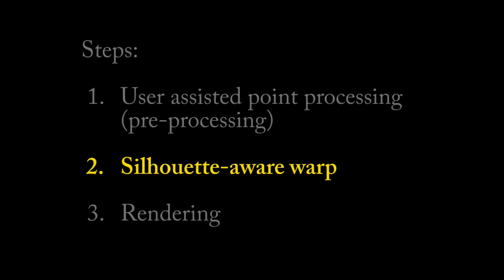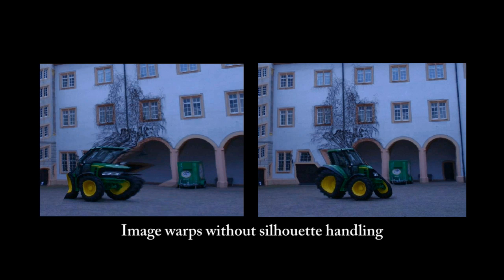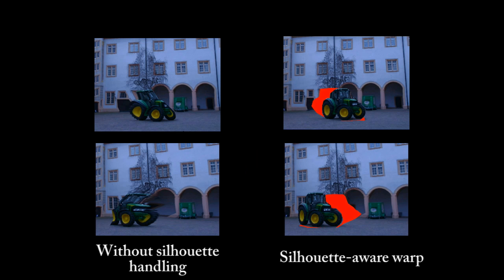The sparse point set and the silhouettes are used to define our new warp. We create a warp mesh for each input image and add special elastic triangles around silhouettes. Without silhouette constraints, depth discontinuities cause severe distortion, as shown here. Our silhouette-aware warp preserves the outline of foreground objects even for wide baseline warping. The elastic triangles shown in red represent disoccluded pixels filled in from other images during rendering.